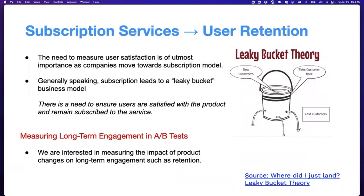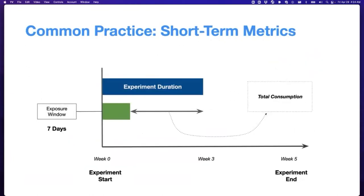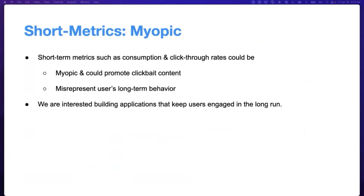In this work we are interested in measuring how product changes can impact long-term engagement — that is, how to run A/B tests with the goal of measuring and improving long-term engagement such as retention. A common practice today is to run A/B tests computing aggregated metrics such as total consumption, which are often short-term. However, this approach of using short-term metrics can often be myopic and could misrepresent users' long-term needs or goals. For instance, this can lead a recommender to promote clickbait content.